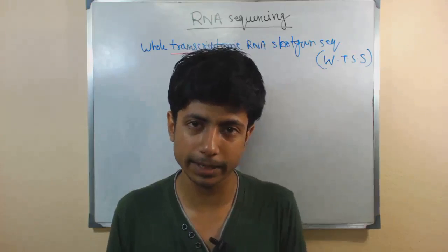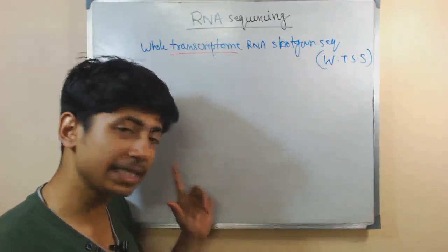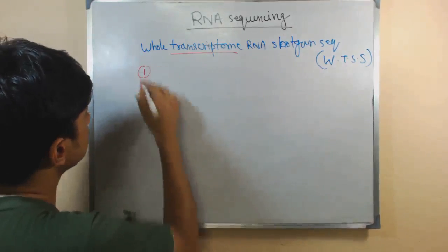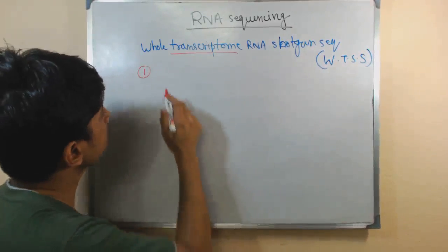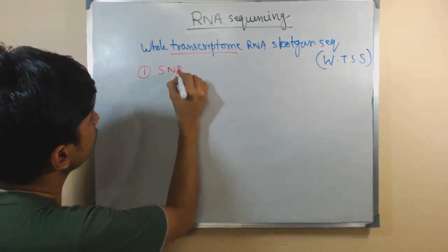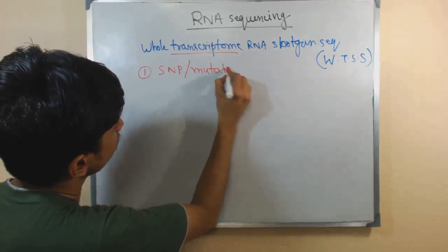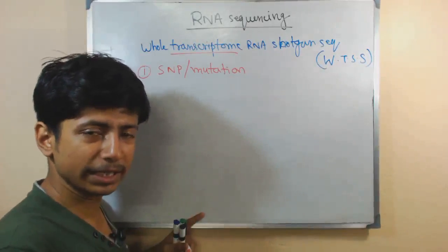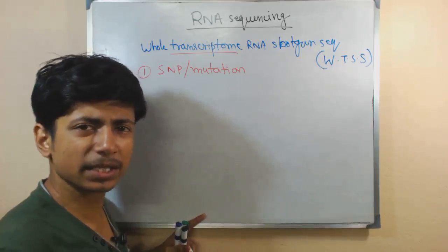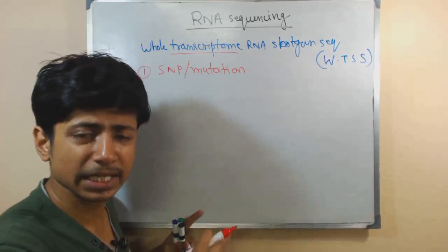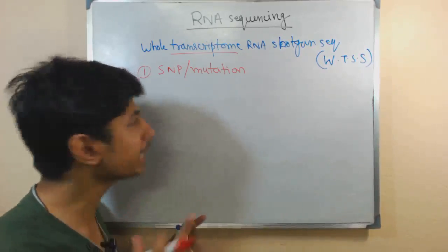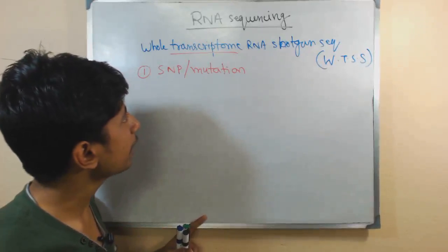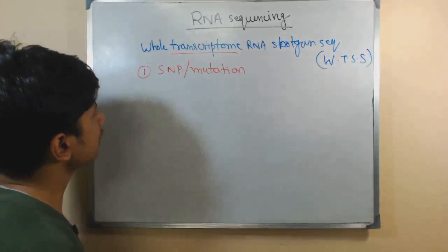Now the question remains: sequencing the genome is important, and we know that, but what is the importance of RNA sequencing? RNA sequencing can tell certain important insights about the cell. One of the important things is that RNA sequencing can give us an idea about any kind of single nucleotide polymorphism or mutation found in the RNA content. From the DNA, RNA is produced, but during the transcription process there might be some changes — some mutations or SNPs — that result in a change in the sequence of RNA, and we can detect it using RNA sequencing.